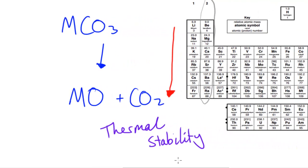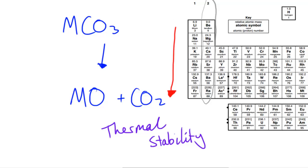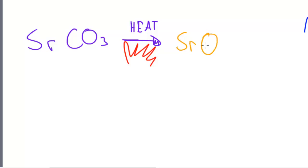If I was to draw this reaction out with an actual group 2 element, maybe strontium: if you imagine SrCO3, and that reacts after the heat has been applied, so heat, might just draw a little flame here, and so that reacts and this forms SrO and it also forms CO2.